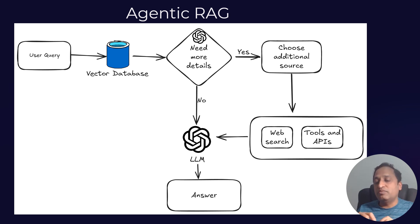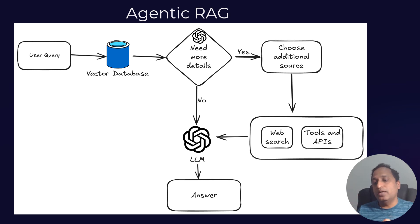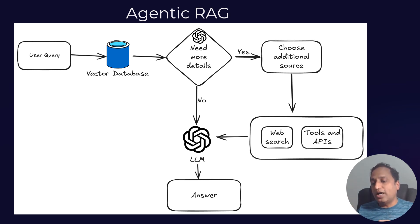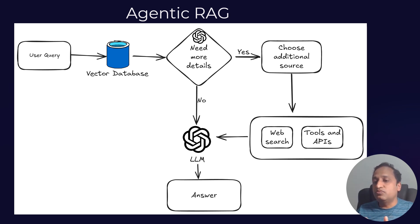This is where agentic RAG helps — you may not have every piece of information within your database, so you might need to get data from external sources like a web search or an external API. Agentic RAG is all about retrieving data locally, judging whether that data can answer the user question, and if not, getting additional information from external sources. Both the internal knowledge and the external knowledge are then passed to the LLM to answer the question.